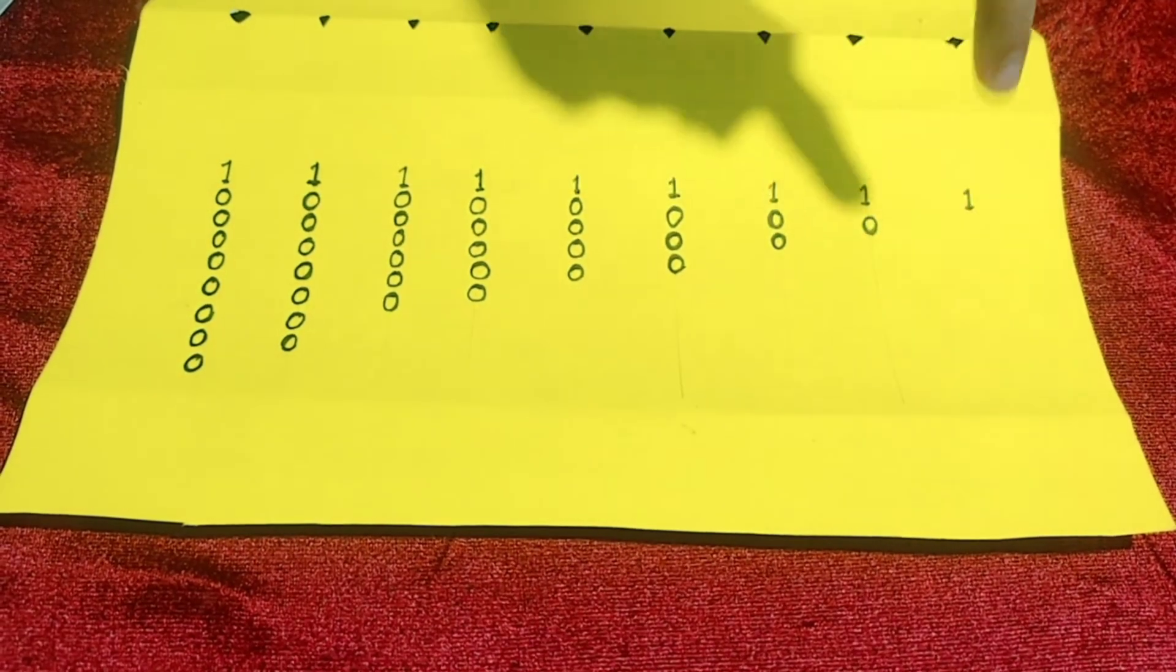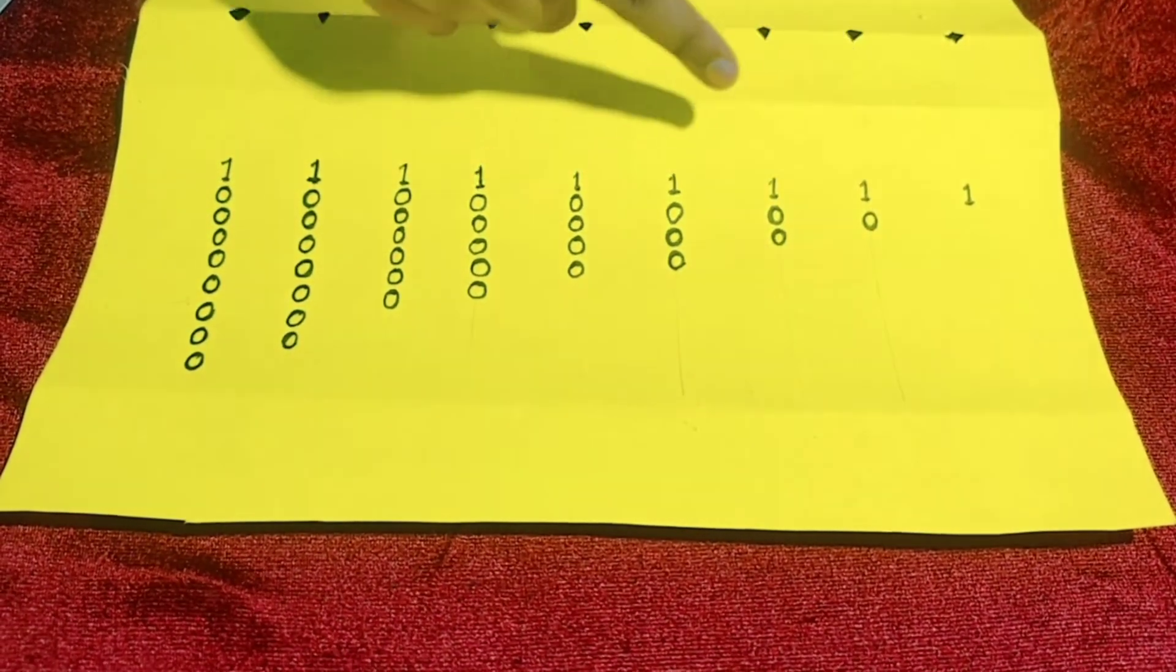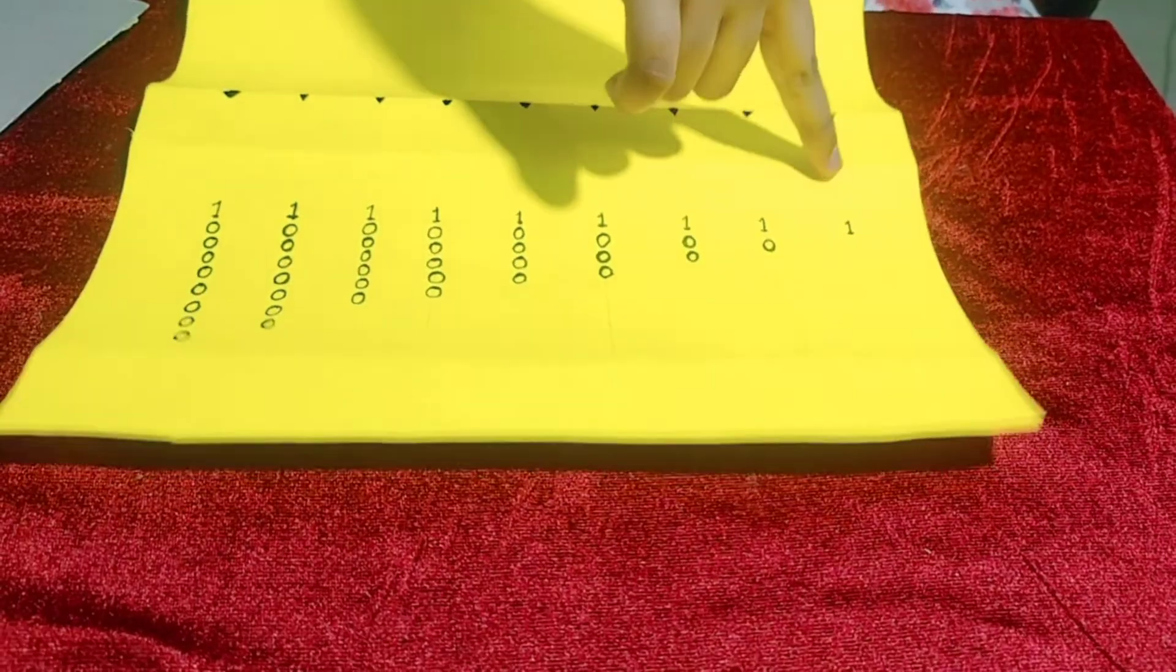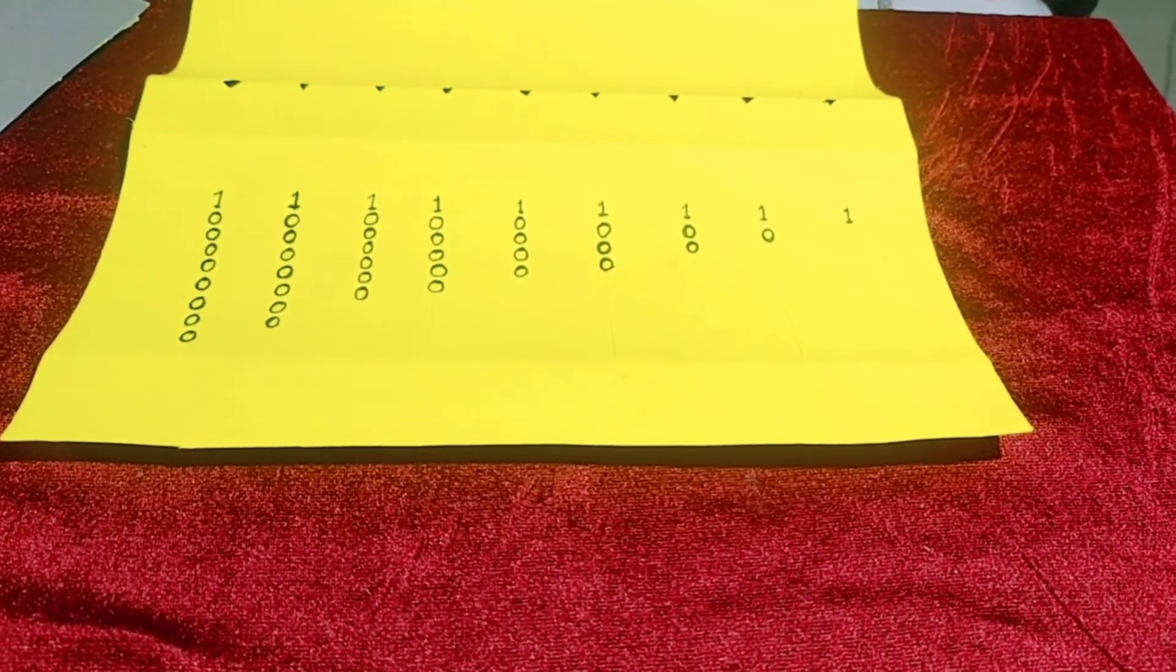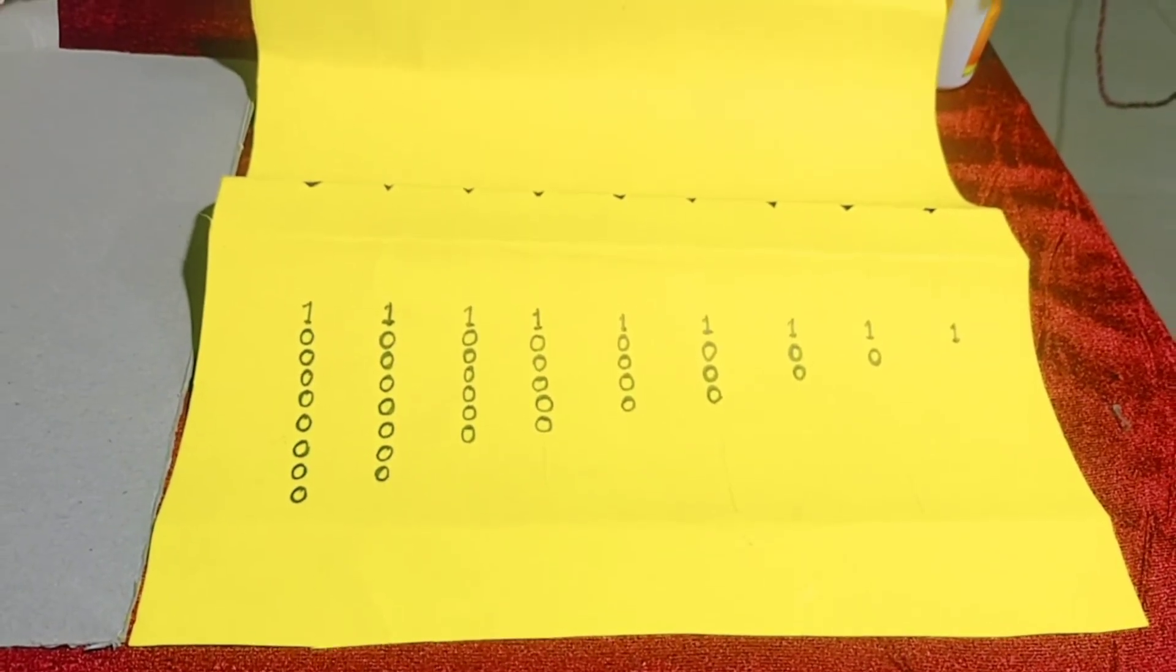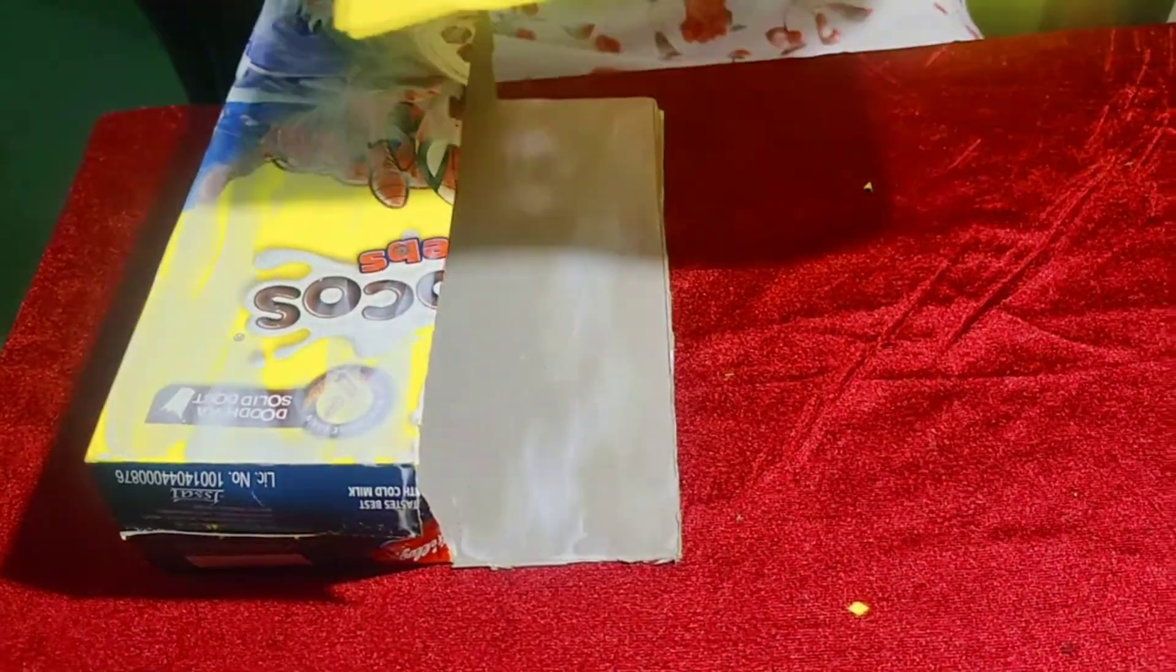And in the down part, write like this. That is 1, 100, 1000 etc. With the silver coin, let's fix it here. Now let's fix it here.